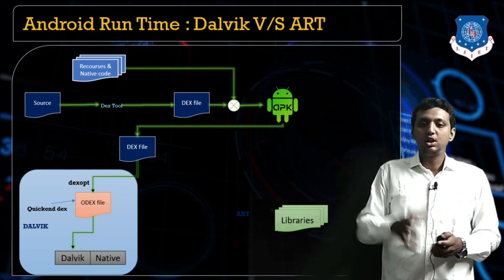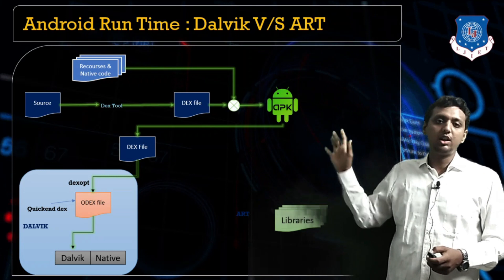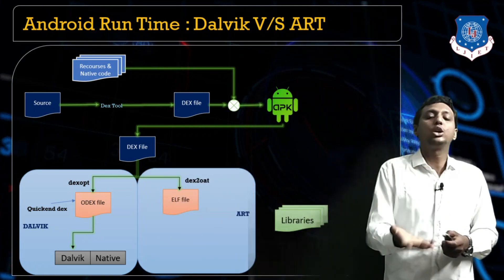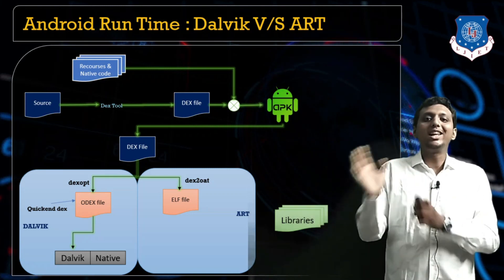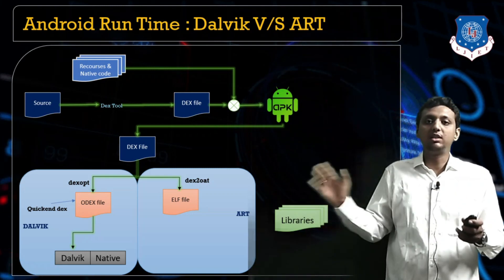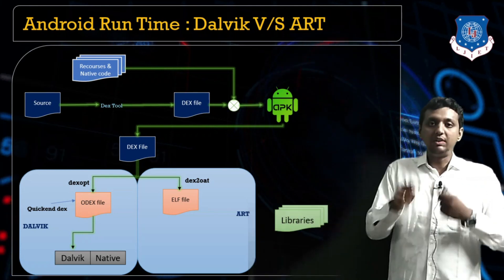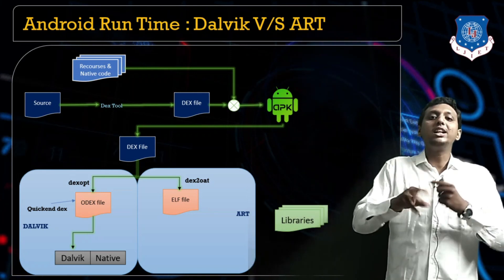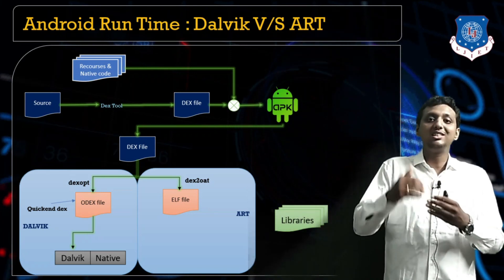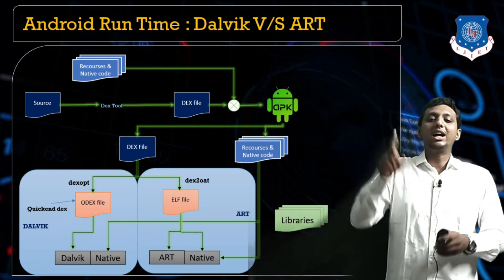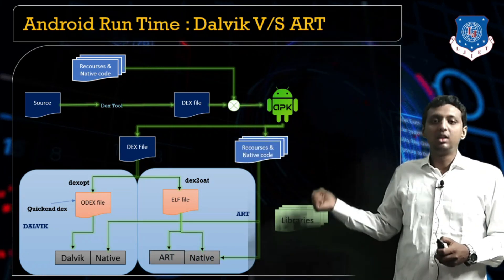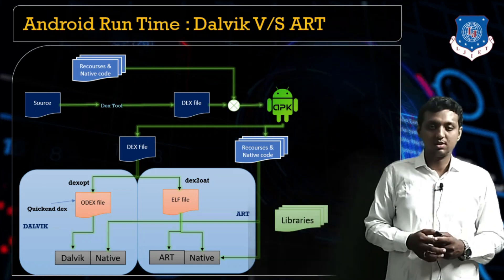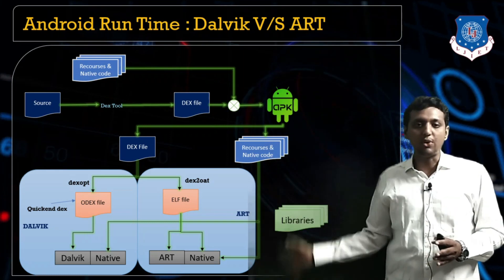With ART, the code is already executed before runtime. When the app is run, the file is in ELF (Executable and Linkable Format) format — which is already compiled. You just need to start it; it's ready to execute. This ELF file is matched with the Android Runtime and called by the OS, and the app works. In Dalvik, code is compiled at runtime; in ART, code is compiled before runtime — at installation time.